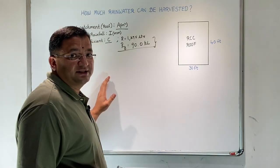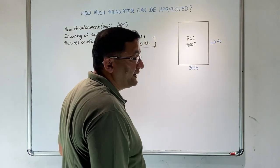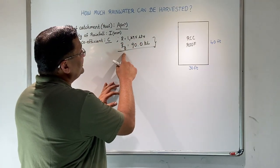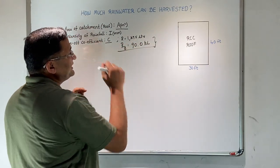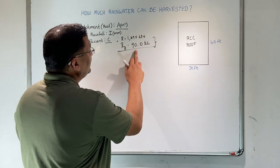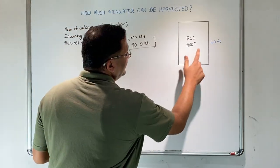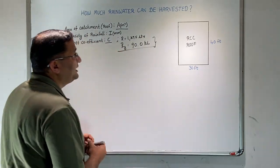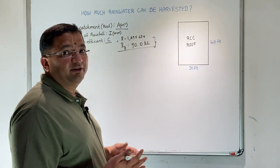We have seen for a particular surface in the city of Bangalore, our yearly rainwater runoff is 90,000 liters or 90 kiloliters for a 30 feet by 40 feet roof area. Now, let us look at the demand for water.